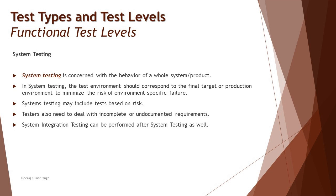A lot of people think system testing is just about testing an application entirely — and that is correct — but there is more. Environment is part of it, risk is part of it, and you ensure all functional parameters are working fine, along with many other things that can be taken into account at the system level. Also, note that system integration testing can happen before or after system testing. If you need more detail, go back to the previous tutorial and compare the statement to understand how SIT can happen before or after system testing.